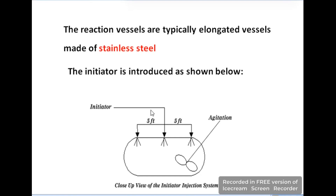These reactors are made up of stainless steel. The initiator is the second raw material in this process and consists of liquid mixtures. Here you can see a close-up view of the initiator injection system, showing how the initiators are fitted with the help of an agitation system.